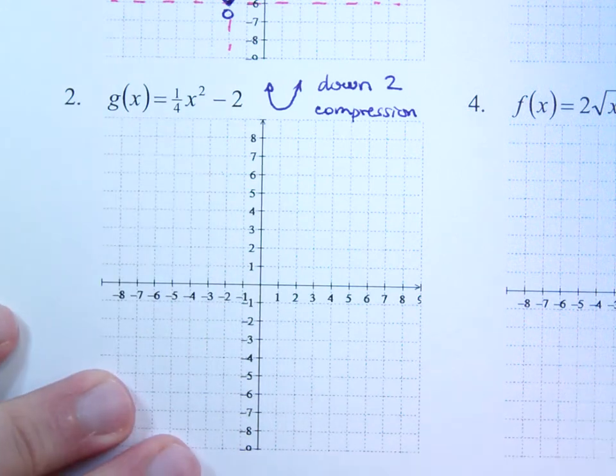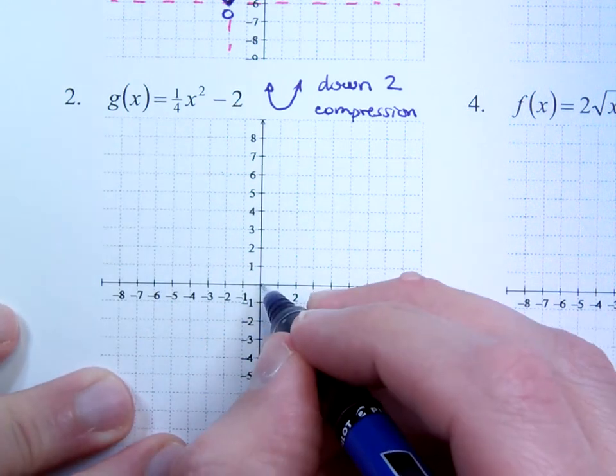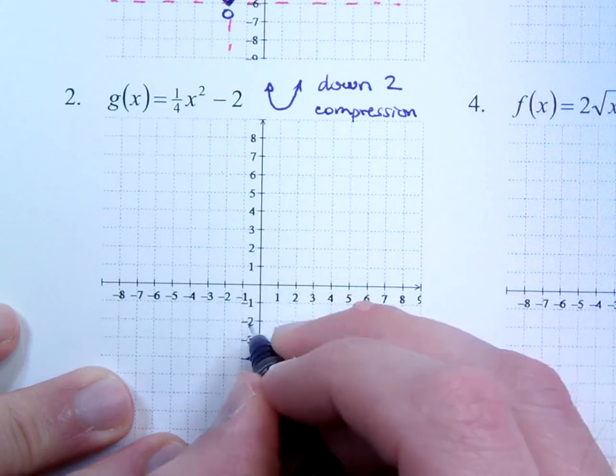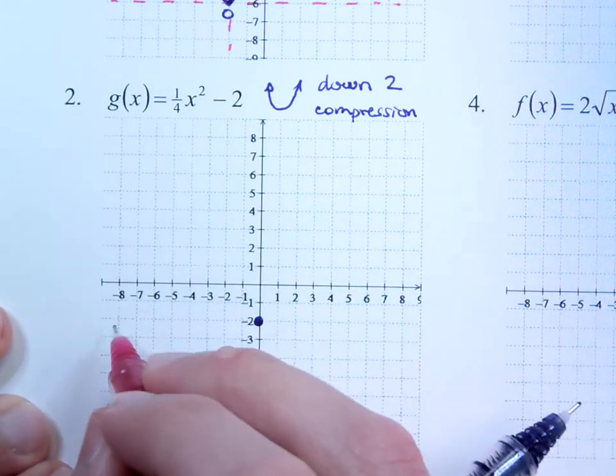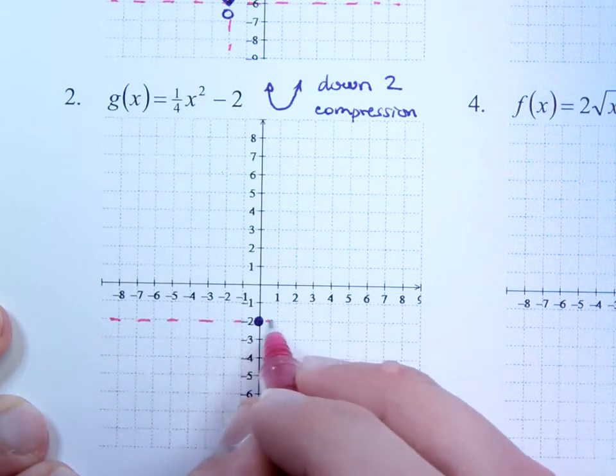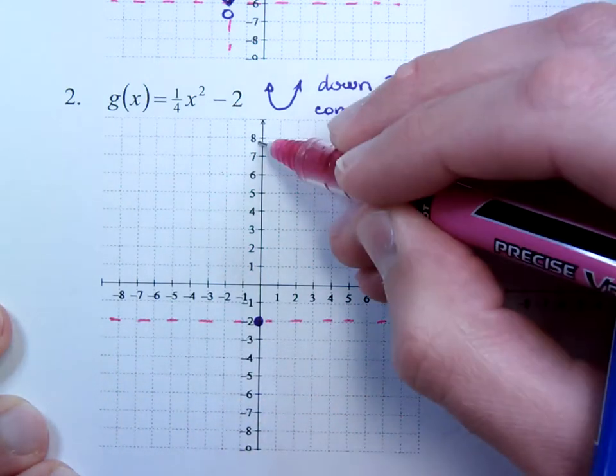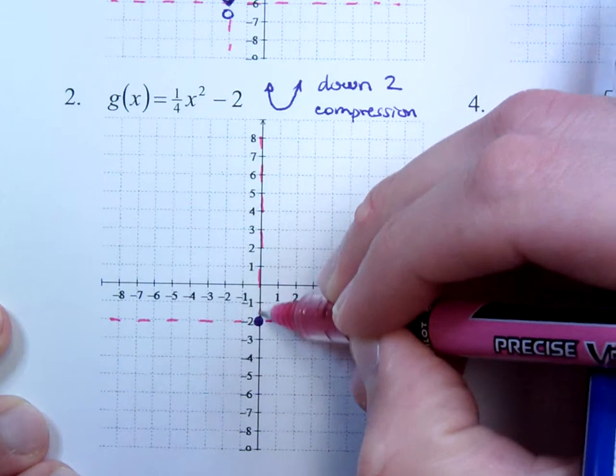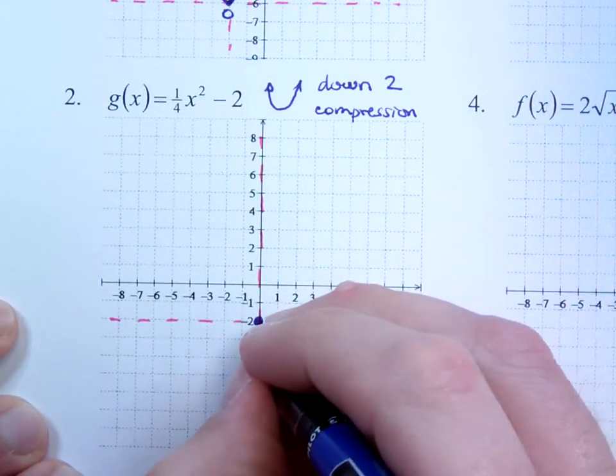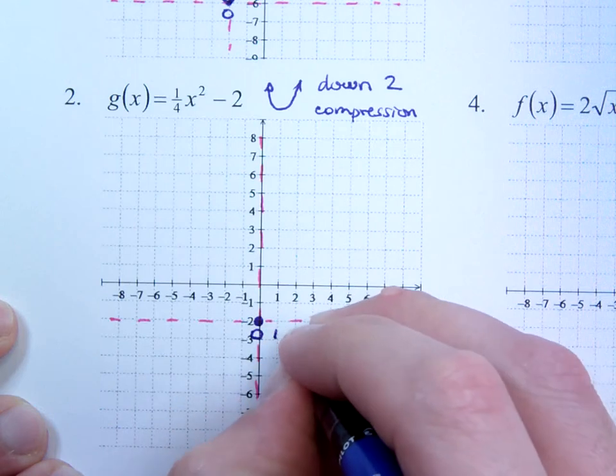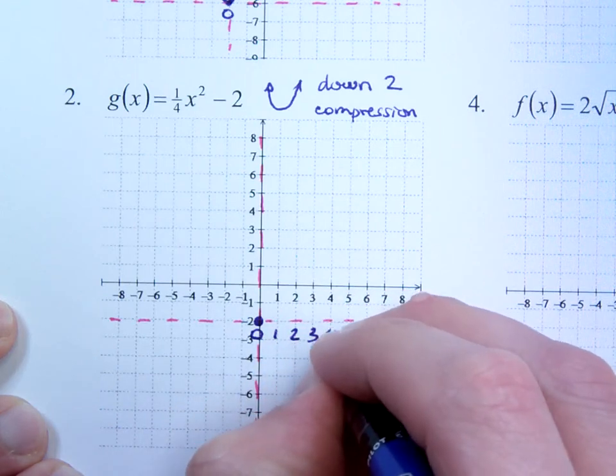First thing is to find the vertex. The original vertex would have been right here at (0, 0), but we're going down 2, so it's going to be located right here. And this will act as our new origin. Remember how we did the squaring function. We counted this off: 0, 1, 2, 3, 4, 5, and so on.